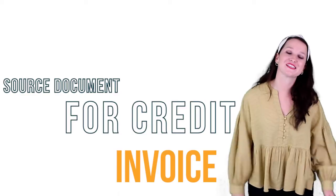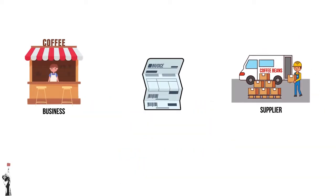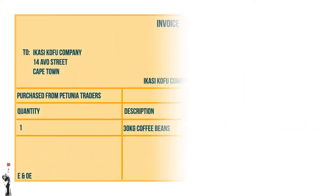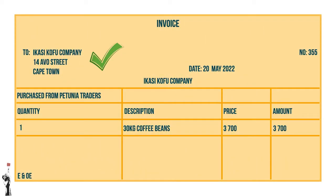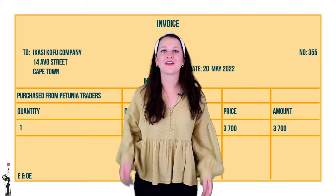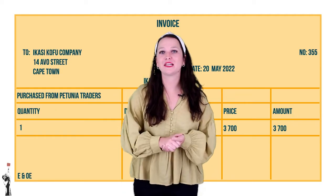An invoice is correct, grade 9s. Remember, the business receives the original invoice while the creditor or supplier keeps the duplicate invoice. Let's quickly run through an invoice together. The name and information of the business that receives the invoice should be on the invoice, as well as the date on which the invoice is compiled. The supplier's name should also appear — for example, Petunia Traders — along with the order description and quantity.